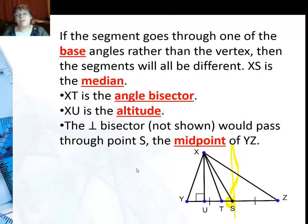So when you have the special segments through an angle that is not the vertex angle, in other words one of the base angles, it's not necessarily going to be the same.